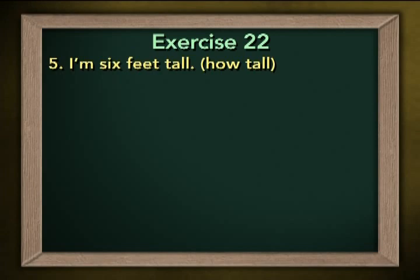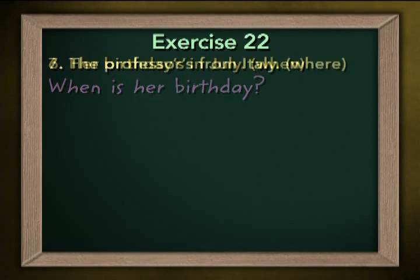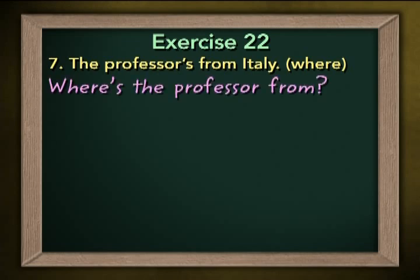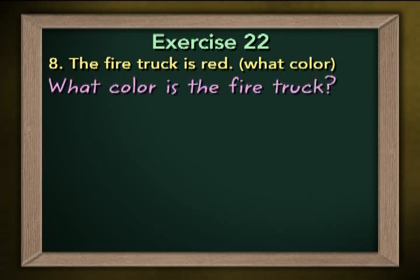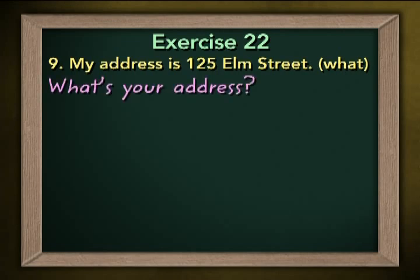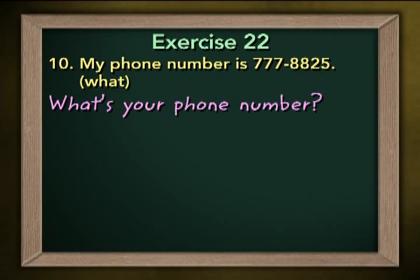Her birthday's in July. When? You wrote 'When is her birthday?' The professor's from Italy. Where? You wrote 'Where's the professor from?' The fire truck is red. What color? You wrote 'What color is the fire truck?' My address is 125 Elm Street. What? You wrote 'What's your address?' And my phone number is 777-8825. What? You wrote 'What's your phone number?' Good job.